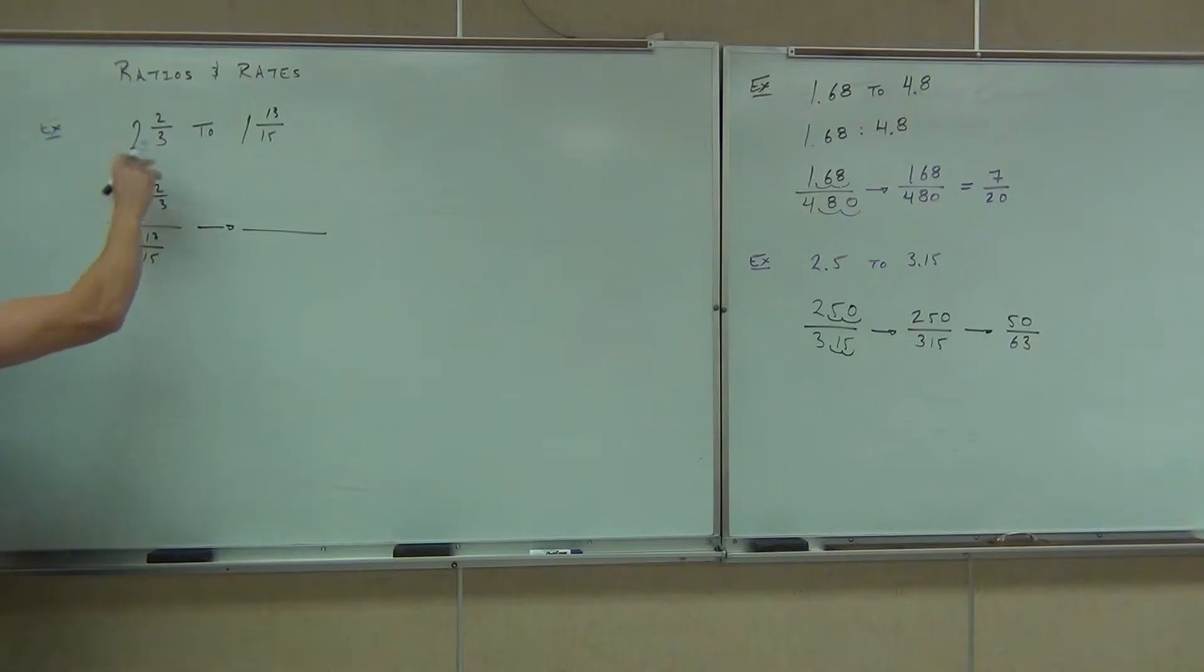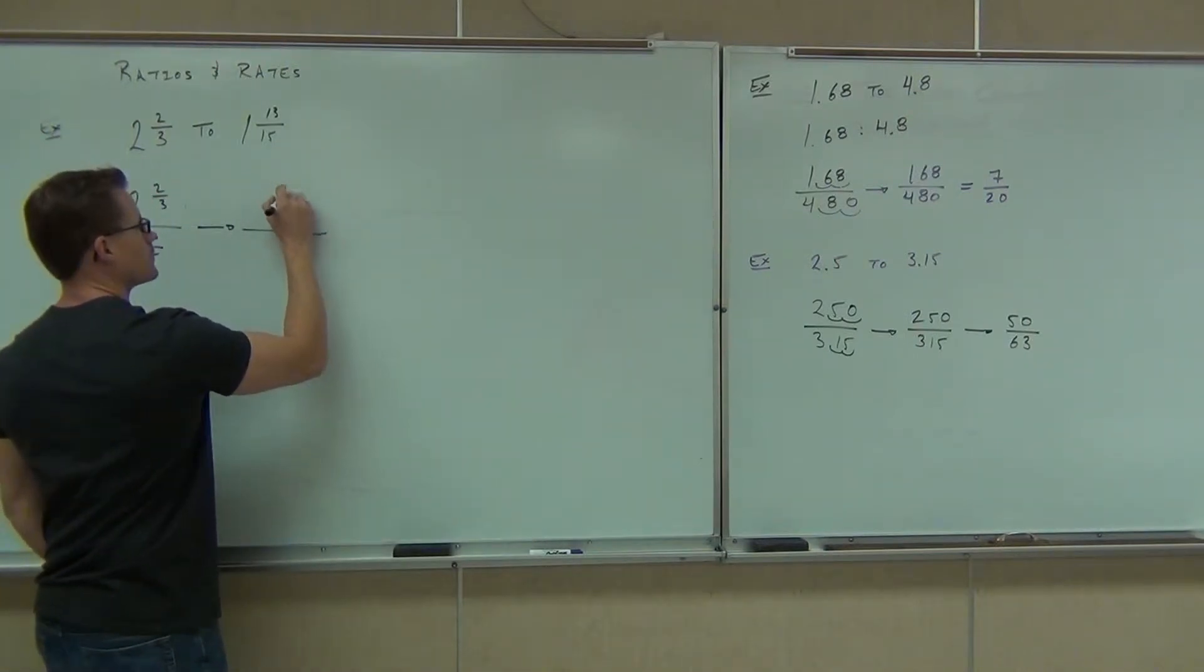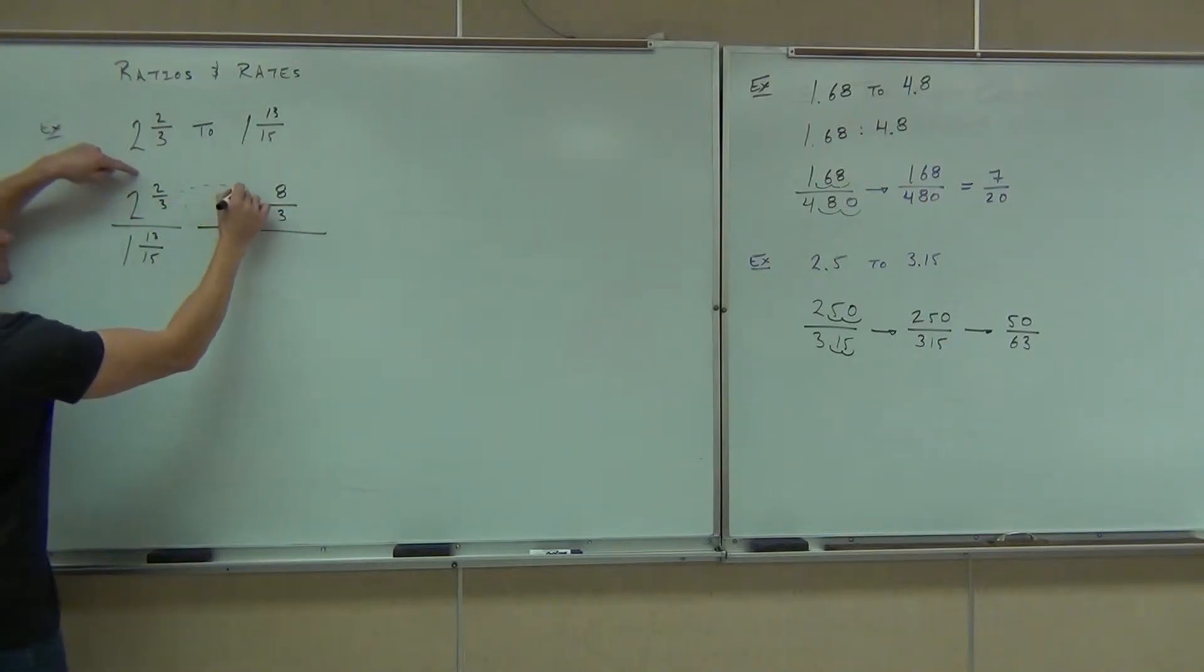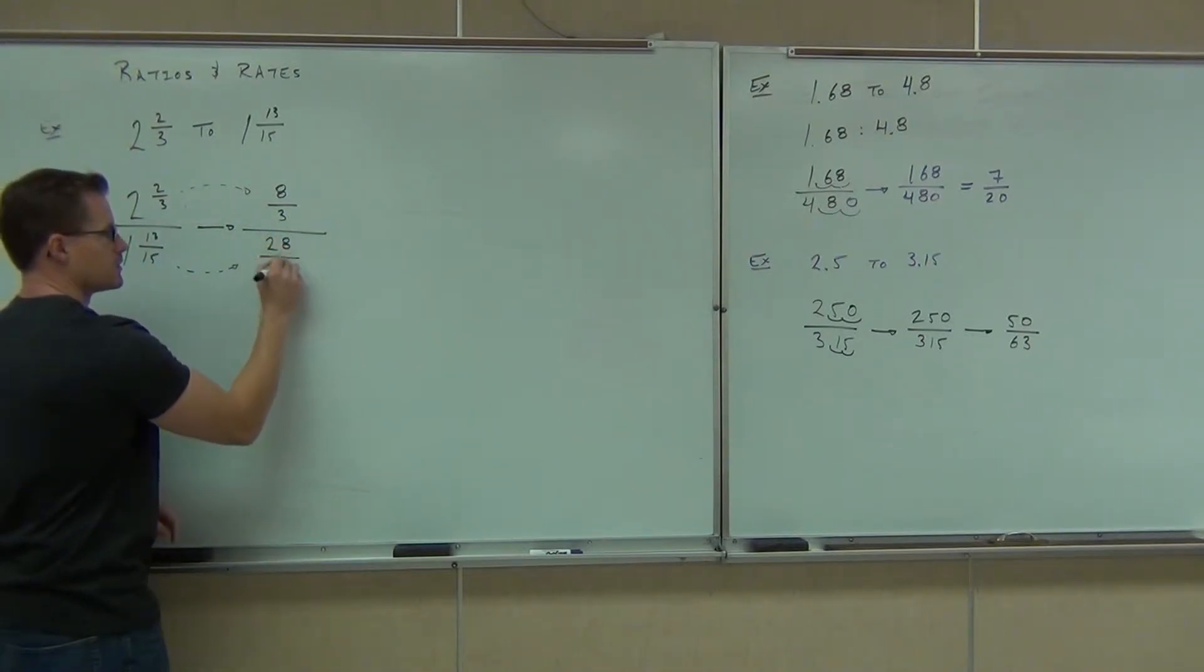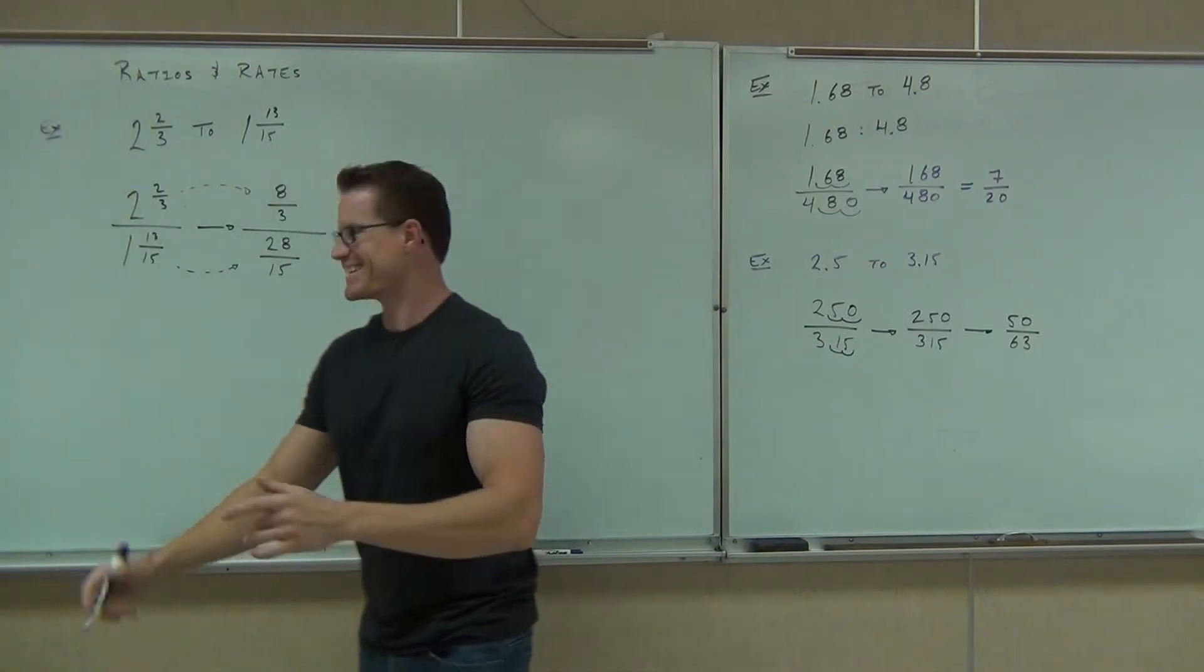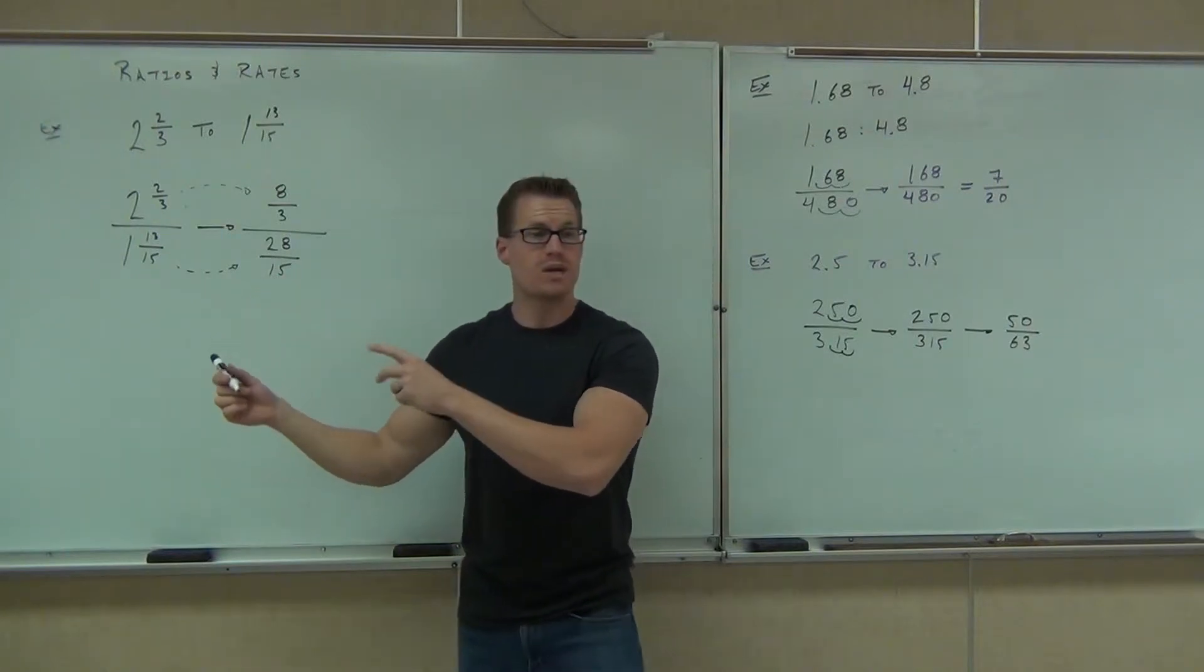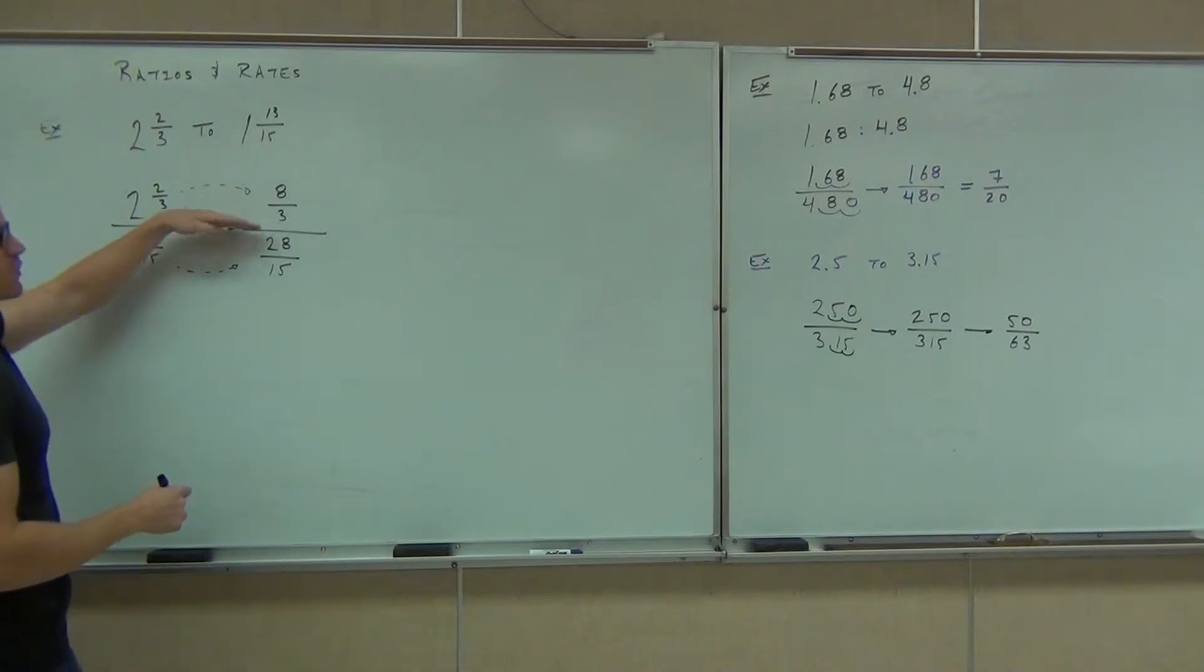On the numerator, what's that as an improper fraction, please? Eight thirds. You agree this is eight thirds, right? What's this one? 28 over 15. Good. Hey, hey, hey, look. Have you done that before? Yeah. Sure. You now have a fraction over a fraction. What's this mean? Divide.